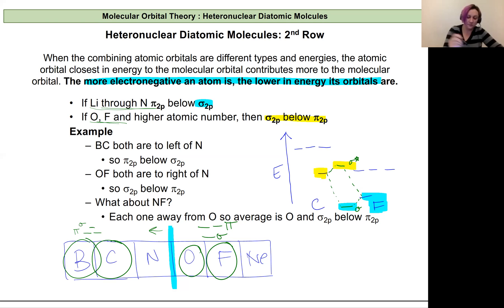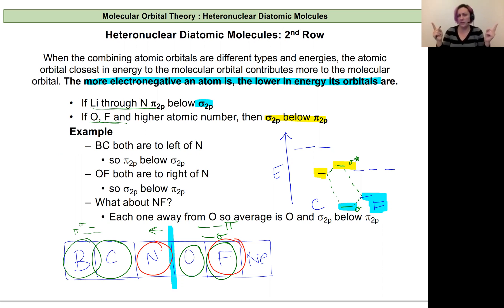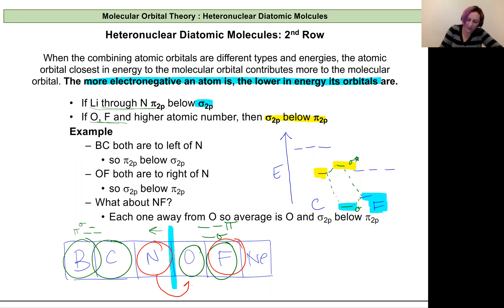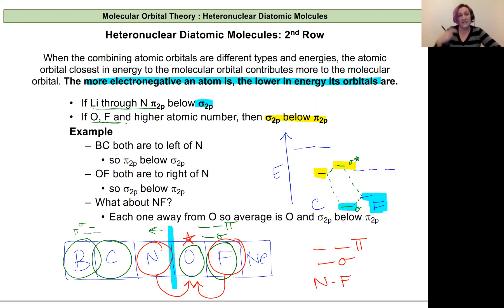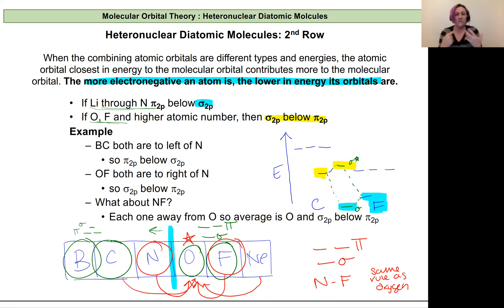For example, nitrogen and fluorine are both one position away from oxygen, so we follow oxygen's rule: sigma is below pi. Similarly, for carbon and neon, oxygen is directly between them, so again we follow oxygen's rule — sigma below pi.